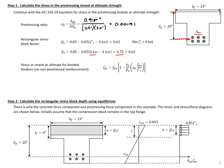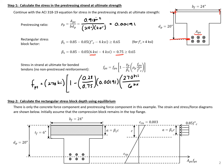Finally, we can plug all these values into our equation for f sub ps. So the stress in the strand at ultimate, f sub ps, is going to be equal to 270 ksi times 1 minus 0.28 divided by 0.75, times 0.00191 times 270 ksi divided by 6 ksi. So we'll get f sub ps equal to 261.3 ksi.